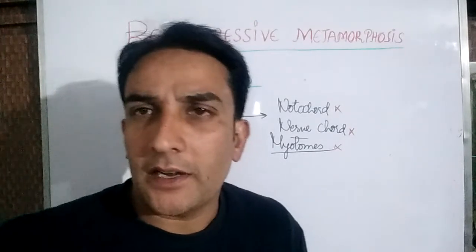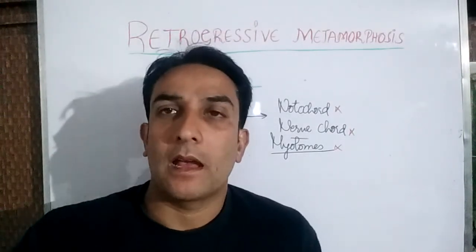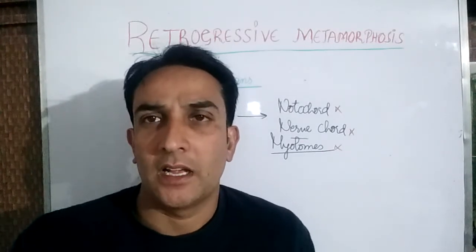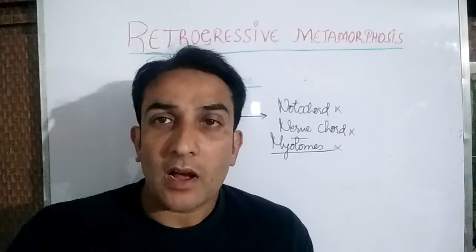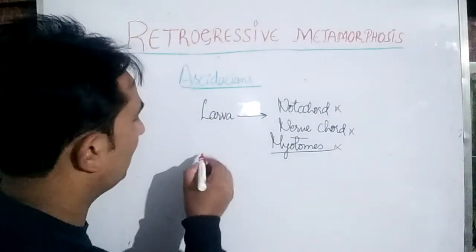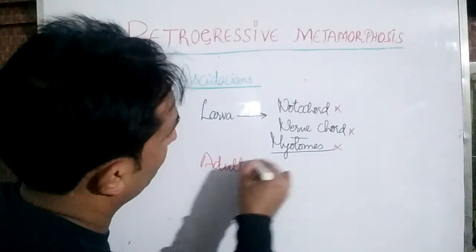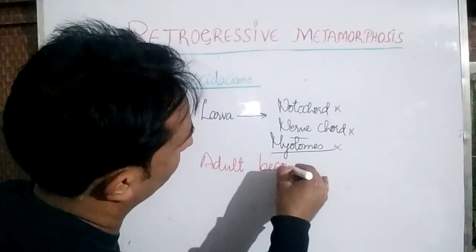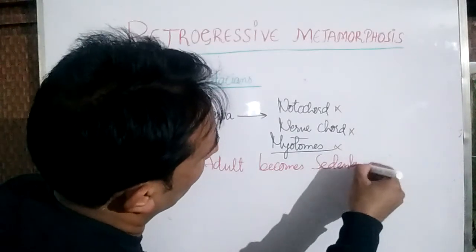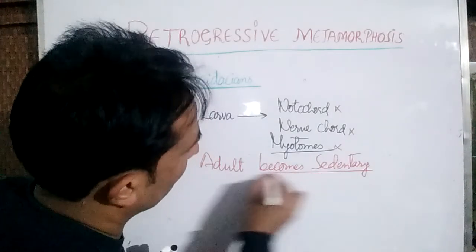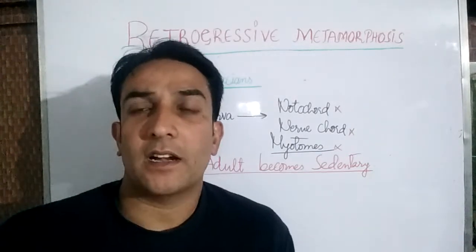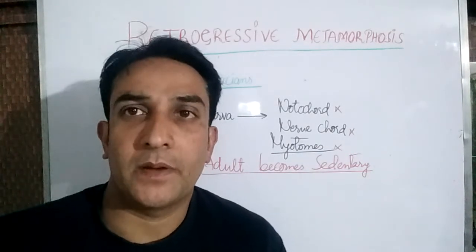So these chordate features are only seen in the larval stage and are not seen in the adult stage. Furthermore, the larva is free swimming but the adult becomes sedentary — meaning it becomes fixed. In the larval stage the Ascidaceans are free swimming, and in the adult stage they are sedentary — that is, they are fixed.